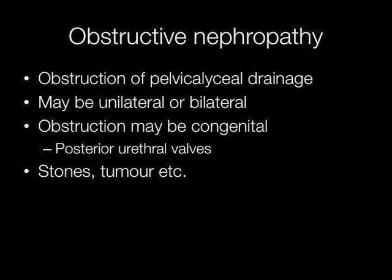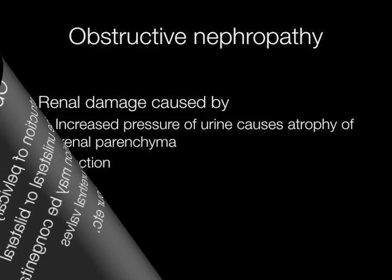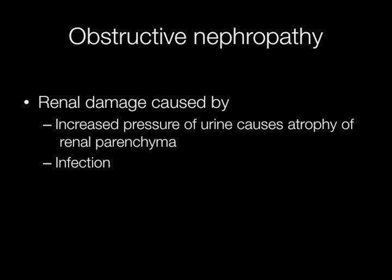Obstructive nephropathy is caused by obstruction of the pelvic calyceal drainage. This may be unilateral or bilateral, and the obstruction may be congenital due to posterior urethral valves. Another cause is conditions such as stones and tumour. The two major causes of damage due to obstructive nephropathy are increased pressure of urine causing atrophy of the renal parenchyma, and infection.